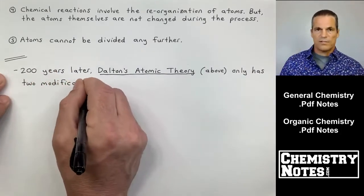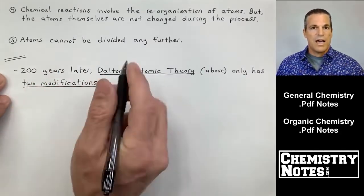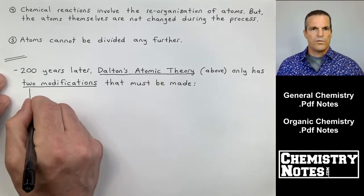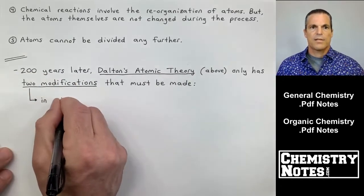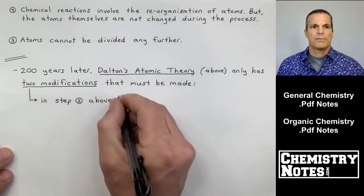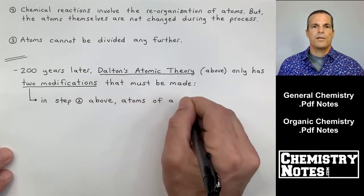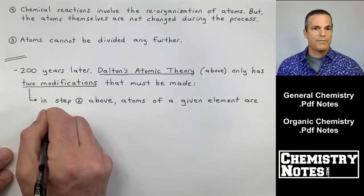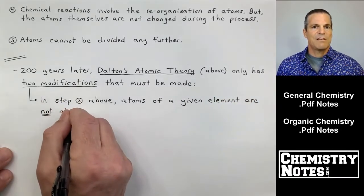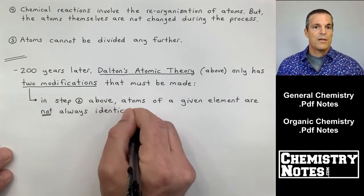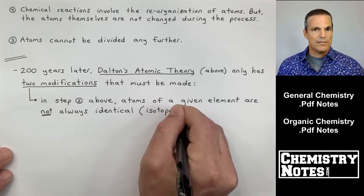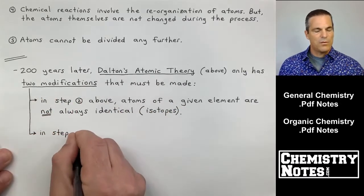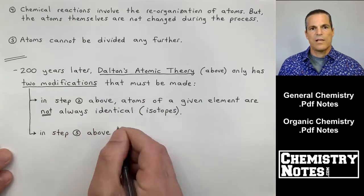Also, on the previous page, if I say the word isotopes, that should help you maybe hone in on one of one, two, and three that needs to be fixed. I'm gonna talk about that right now. 200 years later, Dalton's atomic theory only has two modifications that must be made. In step two above, atoms of a given element are not always identical. We can have atoms of the same element and some atoms have different numbers of neutrons. This is called isotopes. We'll talk about isotopes as we move further through the course.